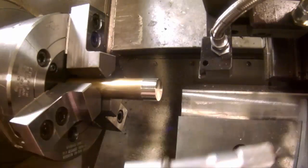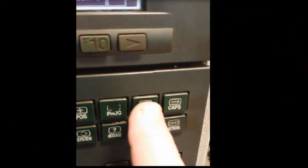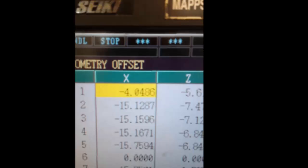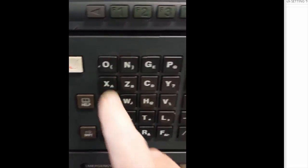So with the tool sitting at .804, we're going back to the offset page. Make sure we get the X axis selected, and we're going to hit X.